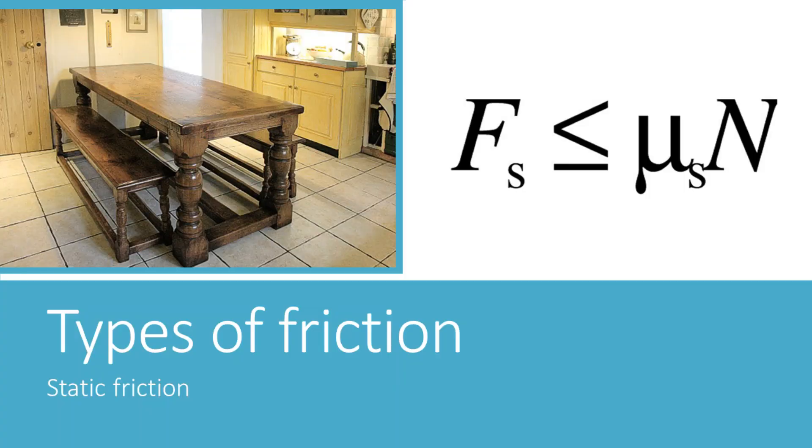Friction is of two types, static friction and kinetic friction. Static friction is basically the one that acts when there is no relative motion between two surfaces. Remember when you tried to push a table and you couldn't move it, it is static friction that comes into play here.